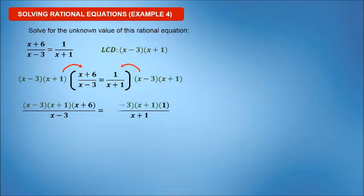The right side will become: x minus 3, times x plus 1, times 1, all over x plus 1.